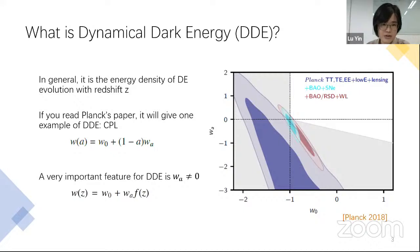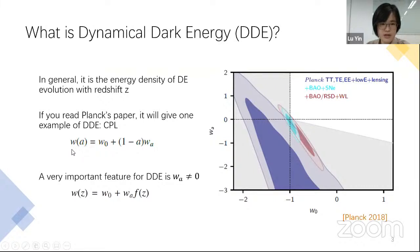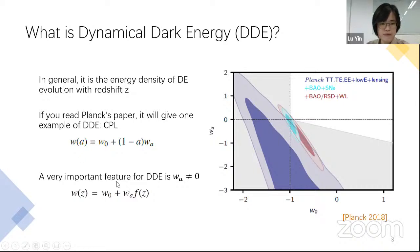In general, dynamic dark energy means that the energy density of dark energy will evolve with redshift Z. If you read Planck's paper, it gives one example of dynamic dark energy — that is CPL. In CPL, the equation of state of dark energy is running with time. From Planck 2018 results, we can see the W_A result is almost smaller than zero. If W_A equals zero, the equation of state will be a constant number, not running with time. So a very important feature for dynamic dark energy is that W_A could not equal zero.